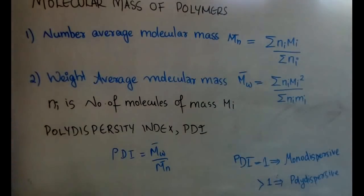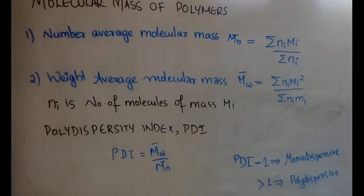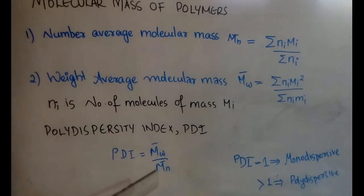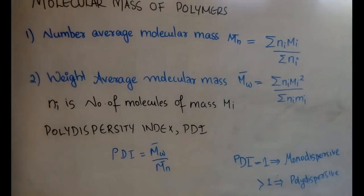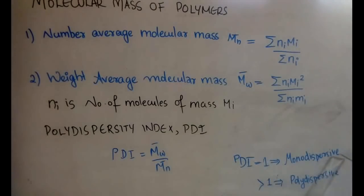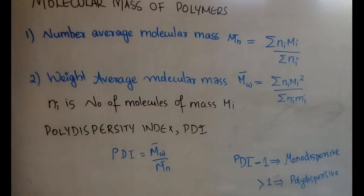The polydispersity index (PDI) is the ratio of weight average molecular mass to number average molecular mass: PDI = M̄w / M̄ₙ. For natural polymers, PDI equals 1, meaning they are monodisperse. If PDI is greater than 1, the polymer is polydisperse — which is the case for synthetic polymers.